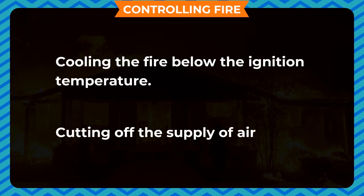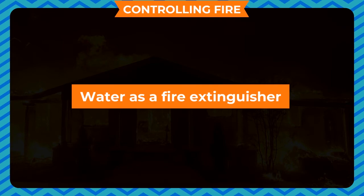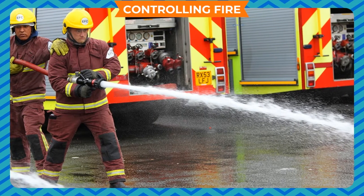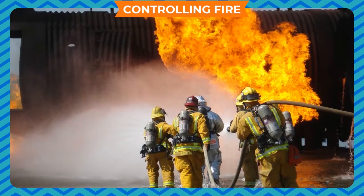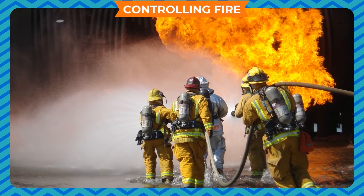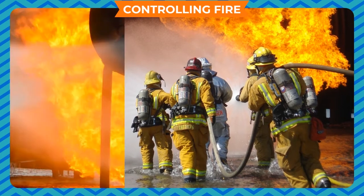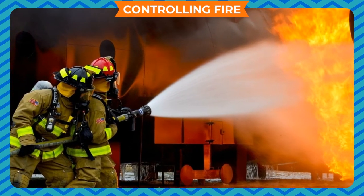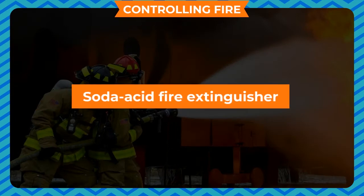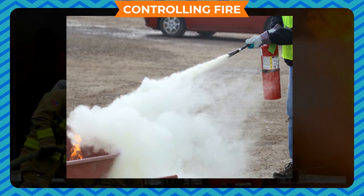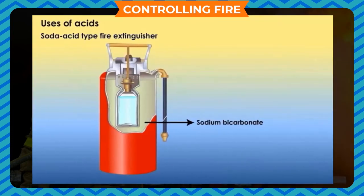Various types of fire extinguishers are used for different types of fire. You must have seen fire brigade people spraying water to extinguish fire at public places. When water is thrown on the fire, it cools the combustible substance below its ignition temperature and the fire is extinguished. However, water should not be used in putting off fire in electrical wiring, as ordinary water conducts electricity and may result in the electrocution of the person involved. The soda-acid fire extinguisher is based on the principle of extinguishing fire by cooling the burning substances below its ignition temperature and by cutting off the supply of air.